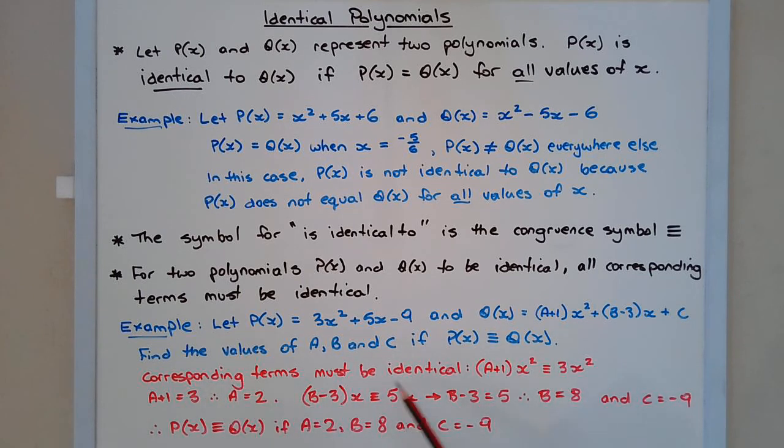Now the corresponding terms must be identical. So the term that corresponds to three X squared is A plus one in brackets times X squared. So A plus one X squared is identical to three X squared. A plus one equals three. Therefore, A must equal two.